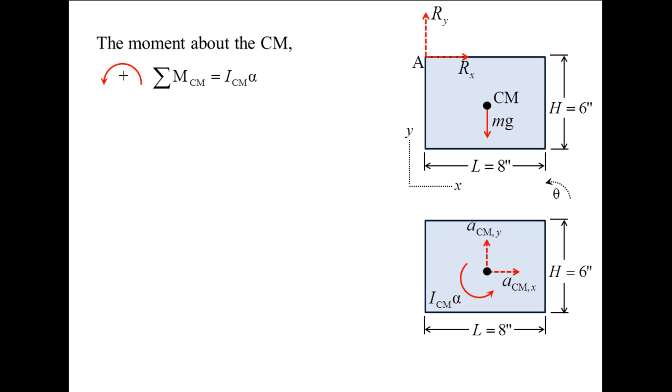For the moment equation, the moment of inertia about the center of mass, ICM, is the mass of the plate divided by 12 times the quantity h-squared plus L-squared. Next, we determine the moments of the external forces about the center of mass. Rx produces a negative moment and has a moment arm of one-half h. Ry produces a negative moment and has a moment arm of one-half L. The weight produces no moment because its moment arm is zero. We now have equation number 3.